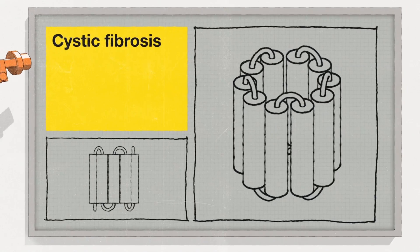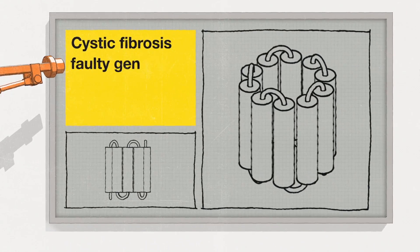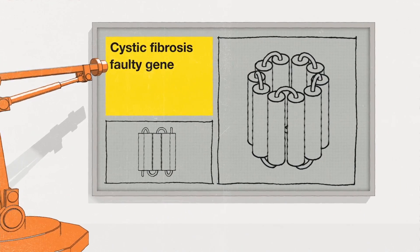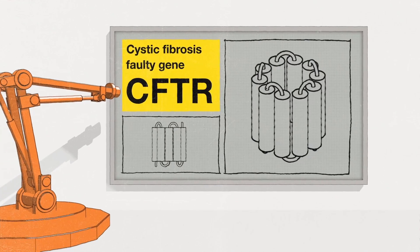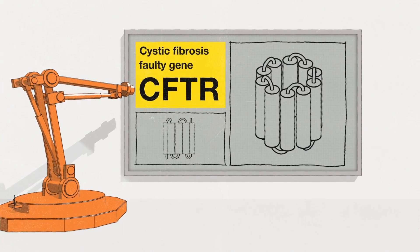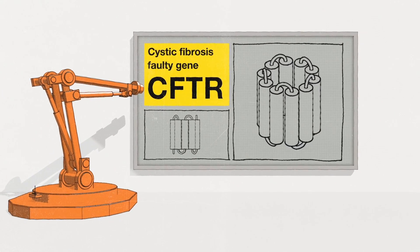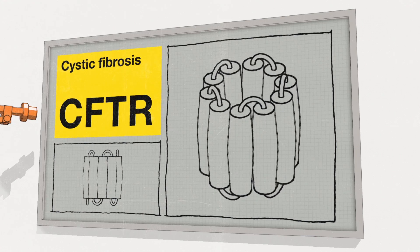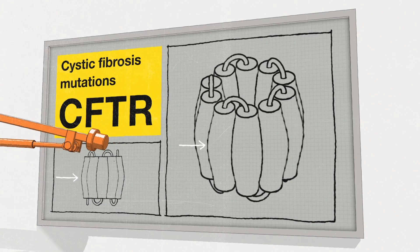Cystic fibrosis is caused by a faulty gene that affects the production of a protein called CFTR inside your cells. Its production can be affected by what we call mutations.